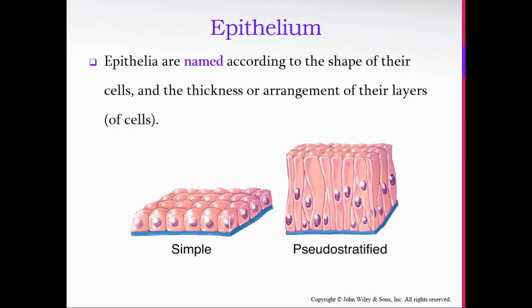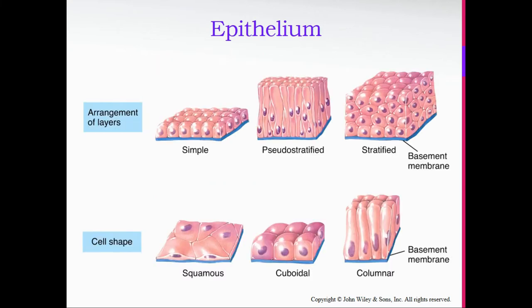Epithelia are named according to the shape of their cells and the thickness or arrangement of their layers. We have simple, which is a single row of cells; stratified, which is multiple layers of cells; and pseudostratified, which is a single layer that appears to be more than one. The nuclei are not lined up, giving the illusion of two layers when in actuality it's just one. Pseudo means false, so that is false stratified.